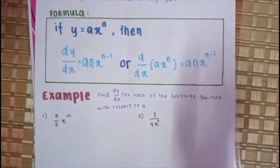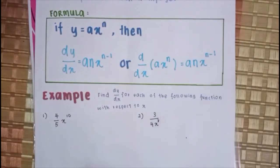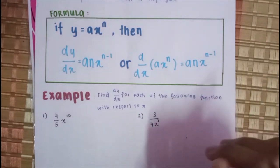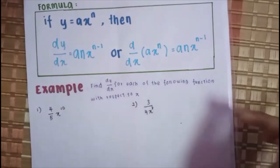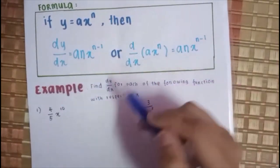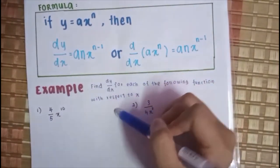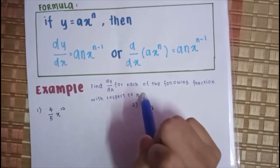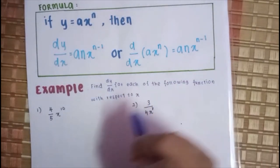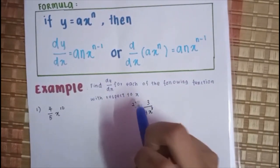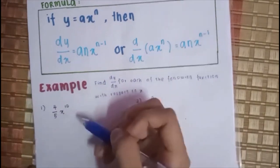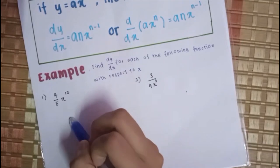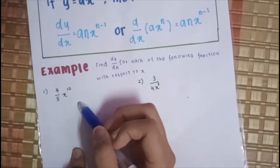Kalau membaca je kawan-kawan tak akan faham kan? Jadi saya akan tunjukkan beberapa contoh soalannya kepada kawan-kawan. Macam mana cara membuatnya? Contoh soalan dia, find DY per DX for each of the following function with respect to X. Macam mana nak buat dia? Nombor 1, 4 per 5 X kuasa 10.